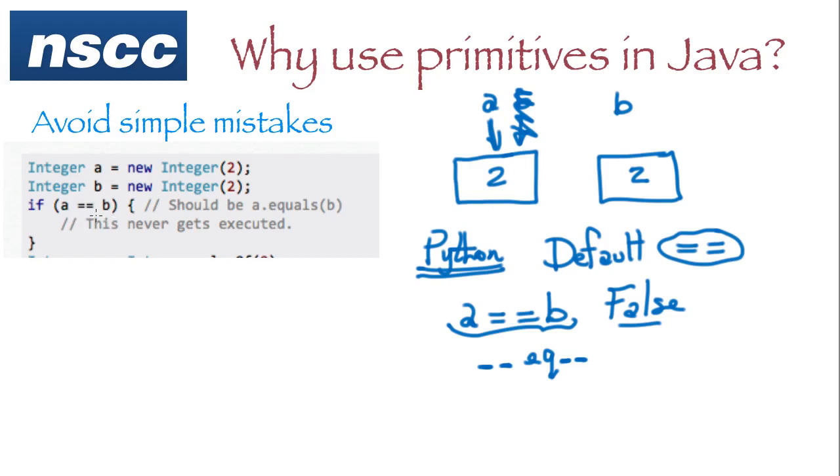But in Java here, if we create an integer A and an integer B, two different objects, and we do this test here that we see, we're actually going to get false because by default, this type of test will only return true if the two objects point to the same object, A and B point to the same object. So how can we get around that? We can get around that by doing a test like this. Because A is an object, we can use a method called equals. And we've got to remember that.